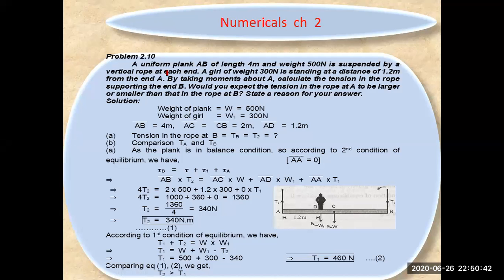Look at a uniform plank AB of 4 meters length. The total length is 4 meters, and the weight is 500 Newtons. It is suspended by a vertical rope at one end. A weight of 300 Newtons is standing at a distance of 1.2 meters from end A.